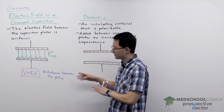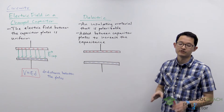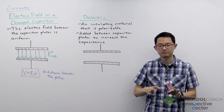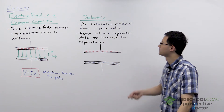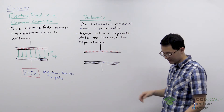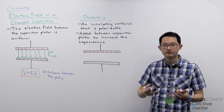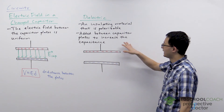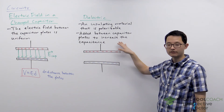Now that we know about the electric field within a capacitor, we can talk about the dielectric. Before, we were assuming that there was a vacuum between the capacitor plates, because dielectrics make the situation a little bit more complicated. Now we want to incorporate dielectrics. Dielectrics are insulating materials that are polarizable — these molecules have molecular dipoles that can be oriented in a particular direction. We add them between the capacitor plates to increase the capacitance.